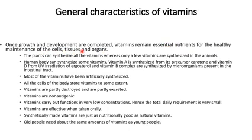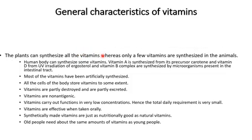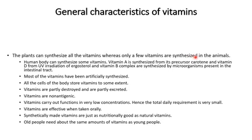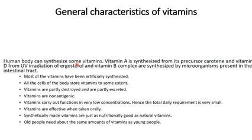Plants can synthesize all vitamins, whereas only a few vitamins can be synthesized in animals — especially vitamin D with the help of sunlight. The human body can synthesize vitamin A from its precursor carotene, vitamin D from UV light acting on ergosterol, and vitamin B complex vitamins are synthesized by microorganisms present in the intestinal tract.